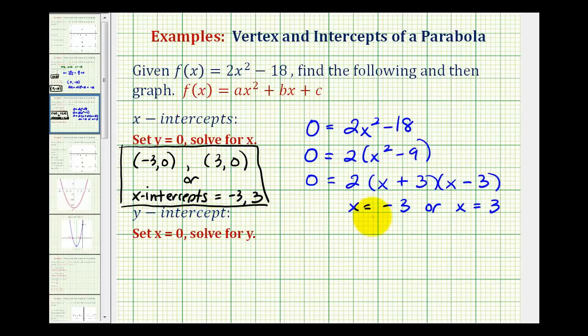What we don't want to do is leave the x-intercepts in the form x equals negative 3 or x equals positive 3, because these two equations represent vertical lines, not points on a graph.